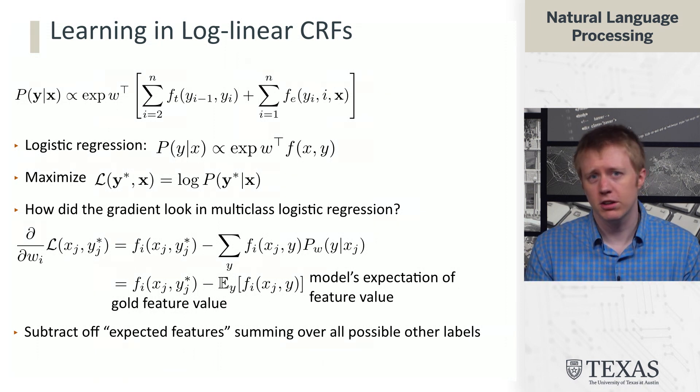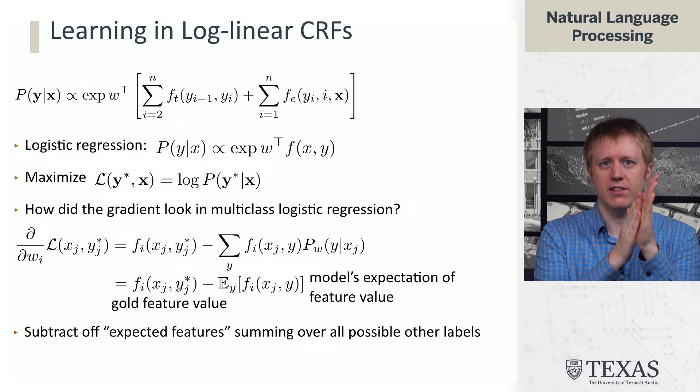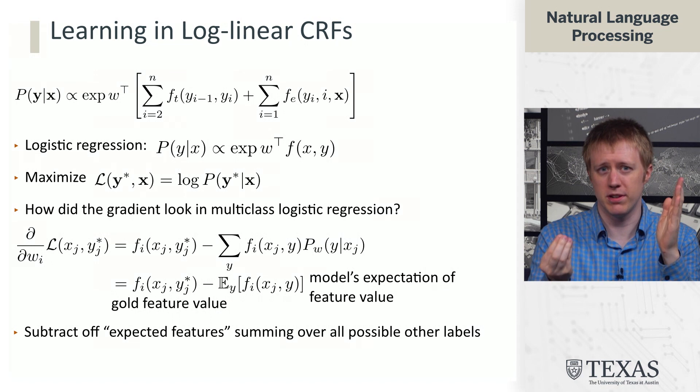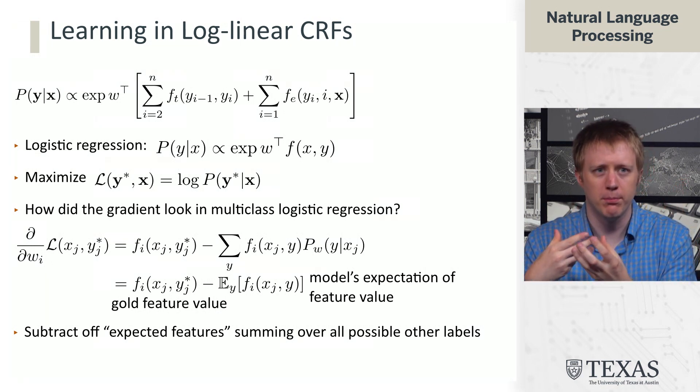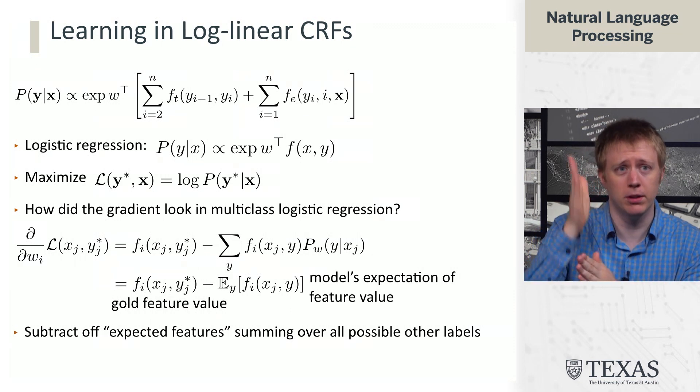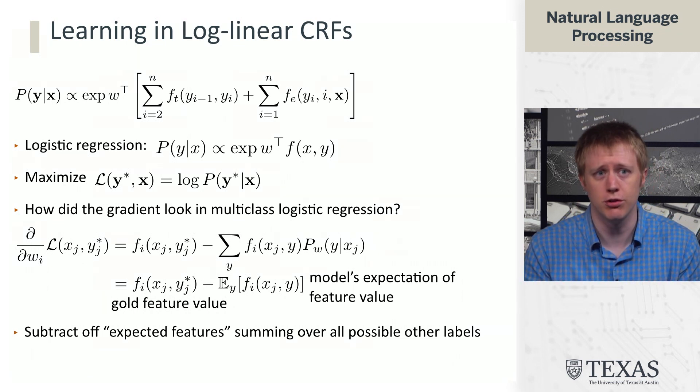And it may not look like it, but this kind of follows the same intuition as the perceptron as well. We are updating towards the gold value and away from the kind of wrong value, where in perceptron that was a single wrong prediction. Here it's now an expectation over what the model kind of thought was the case. But if the model put probability one on some bad hypothesis, this reduces to the perceptron.